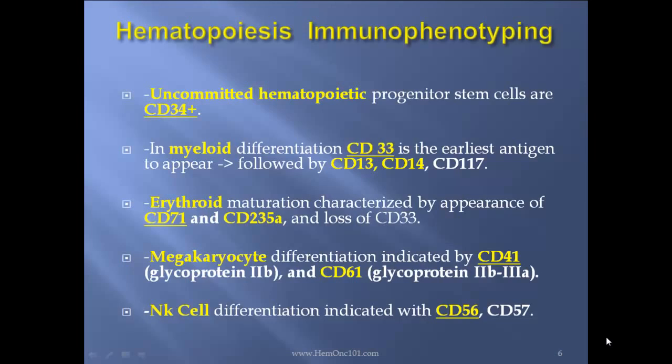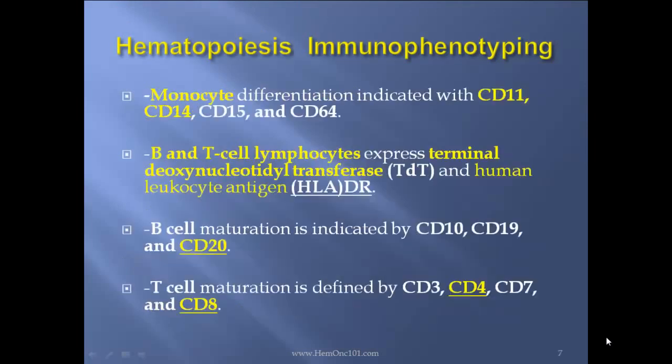NK cell differentiation is indicated by CD56 and CD57. Monocyte differentiation is indicated by CD11, CD14, CD15, and CD64. B and T cell lymphocytes express TdT and HLA-DR. B cell maturation is indicated by CD10, CD19, and CD20. T cell maturation is defined by CD3, CD4, CD7, and CD8.